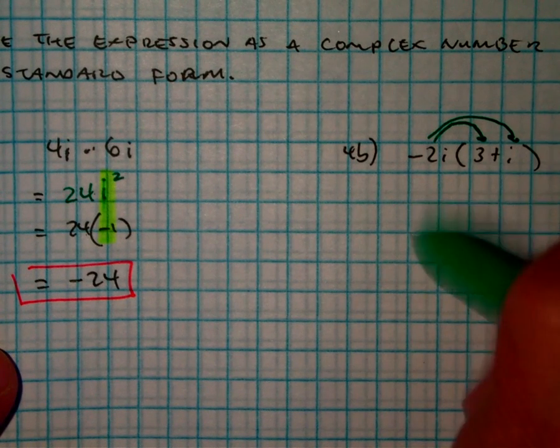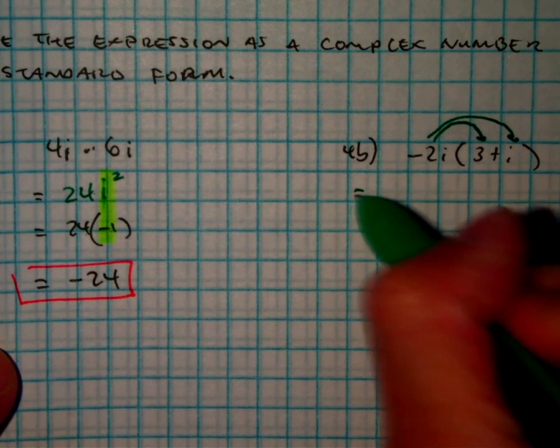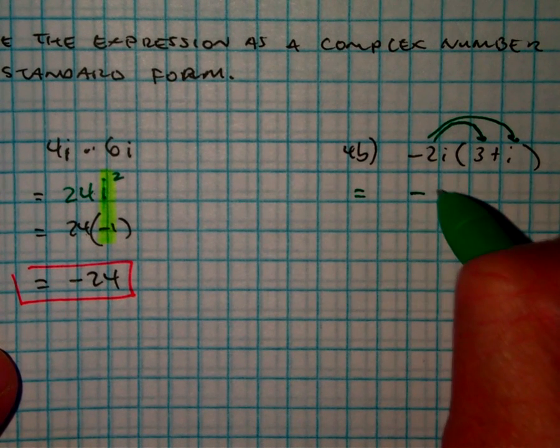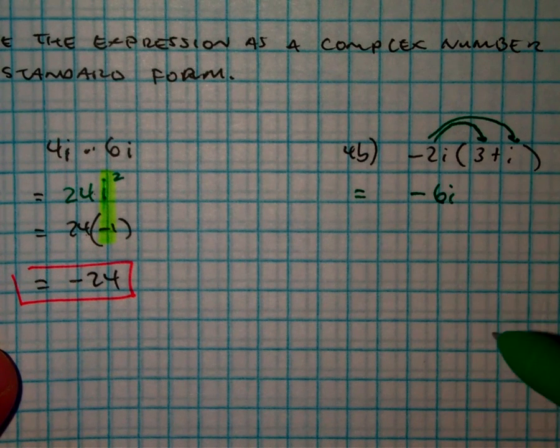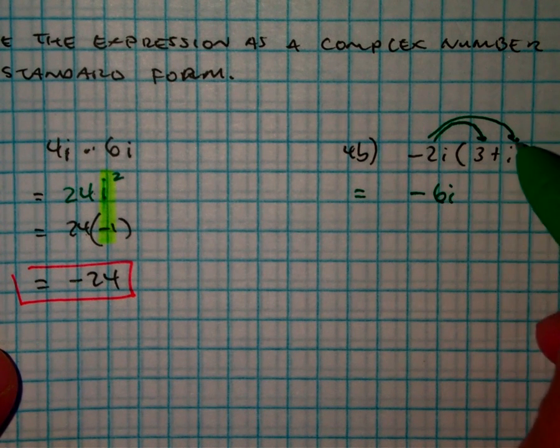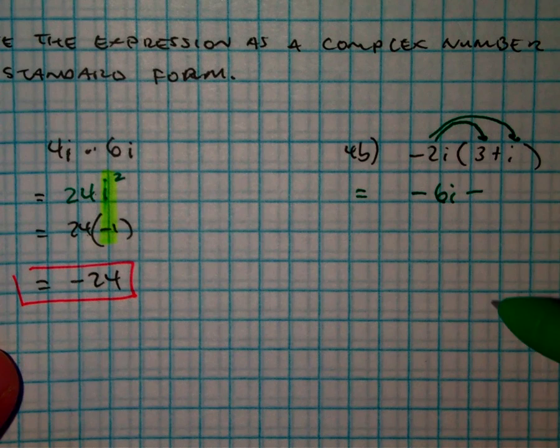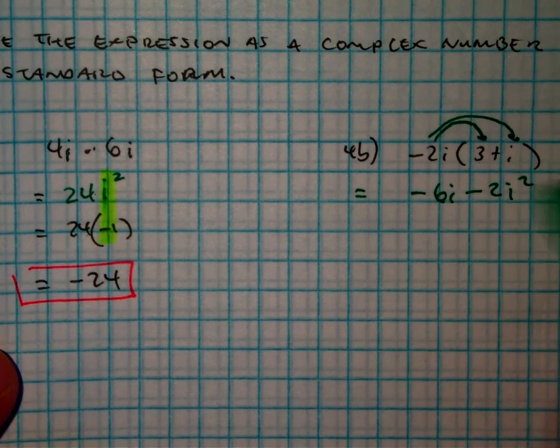So, I have, what do I get? Negative 6i minus or negative 2i squared.